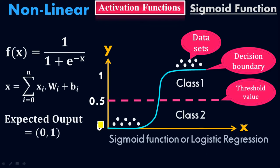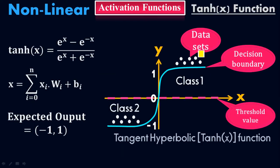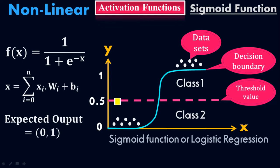The expected output will be 0 or 1. Comparing with the tangent hyperbolic function, the threshold value there was 0 and the two possible values were negative 1 and positive 1. In the sigmoid function, the threshold value is 0.5 and the border values are 0 and 1. So sigmoid classifies data into two classes — above and below the threshold.